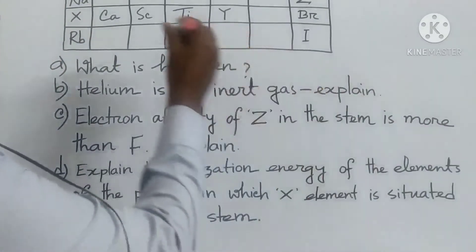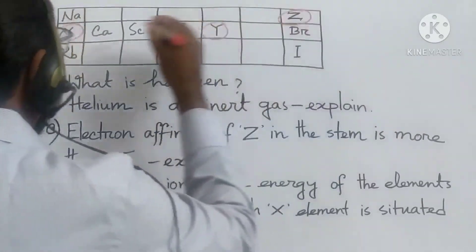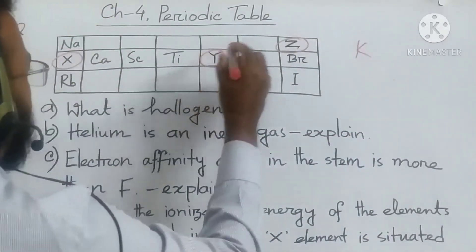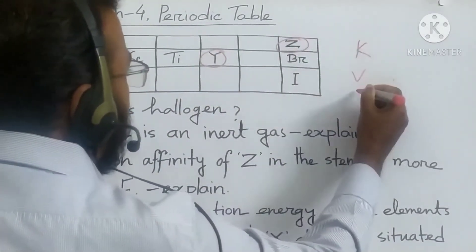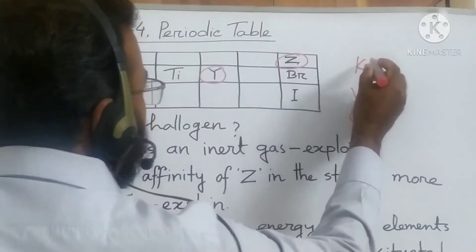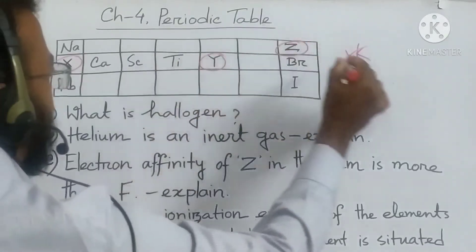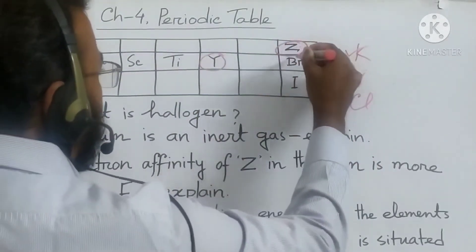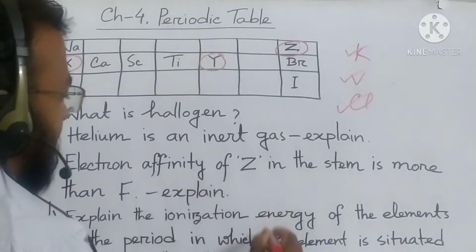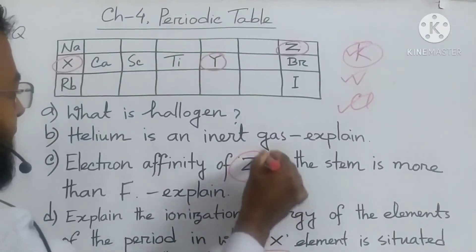Now let's find out what X, Y, and Z will be. X element is after sodium — I think everybody knows — it will be potassium, K. Then Y will be vanadium. And Z is before bromine — I think everybody knows — it is chlorine. So in the periodic table, after sodium is potassium, then titanium, then vanadium, then before bromine it is chlorine. So I identify X element as potassium and Z element as chlorine.